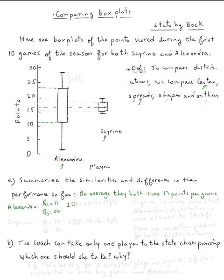So the IQR equals twenty-four minus eleven, which is thirteen points.